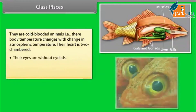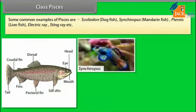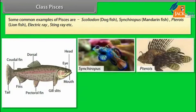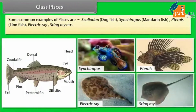Their eyes are without eyelids. They have nostrils and they lay eggs. Some common examples of Pisces are Scoliodon, the dogfish, Synchiropus, the mandarinfish, Pterois, the lionfish, electric ray, and stingray.